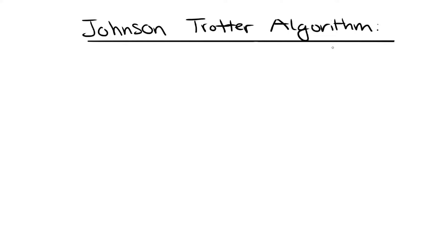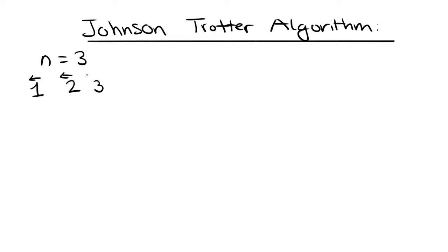In the Johnson-Trotter algorithm, let's say the input is n equals 3, where you're trying to find a permutation of three numbers. The first thing you want to do is generate a sequence of numbers, the most obvious one being 1, 2, and 3. Once you have these three numbers, you're going to put an arrow on top of each one pointing to the left. This arrow is really important for the concept of mobile numbers.